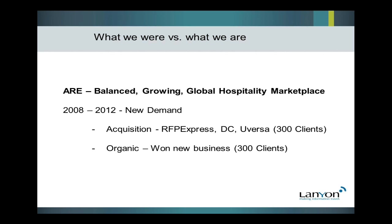We've done that primarily through acquisition. Four years ago we acquired RFP Express. In 2009 we acquired Direct Connections. We sunset both of those platforms and moved all those corporate accounts onto the Lanyon platform. Last year we acquired U-Versa, which had another 120 or so major corporate accounts. We are in the process of sunsetting U-Versa as well and are on track to start the 2013 season with more than 650 corporate accounts all sourcing and distributing their RFPs on the Lanyon platform. We are the only company that brings buyers and suppliers together on the same tool.